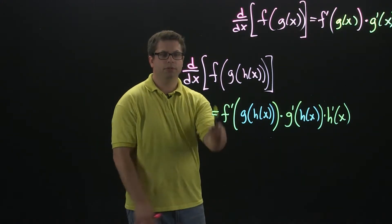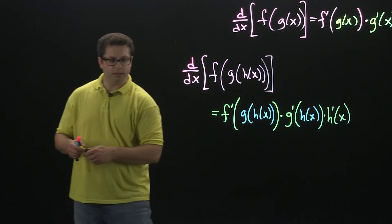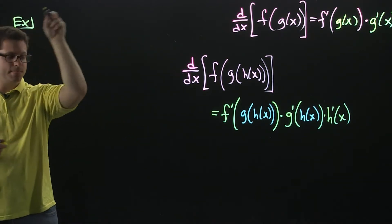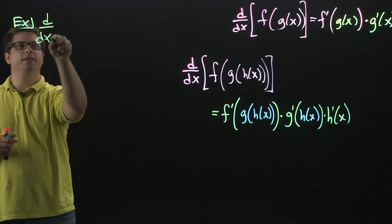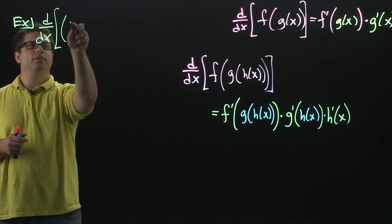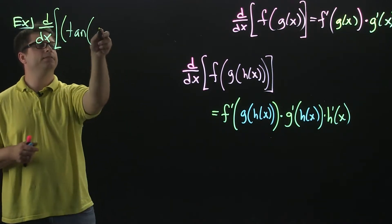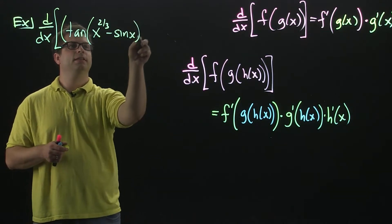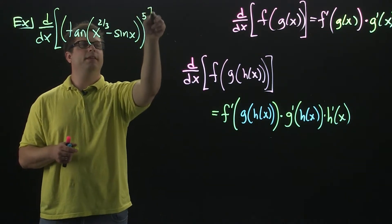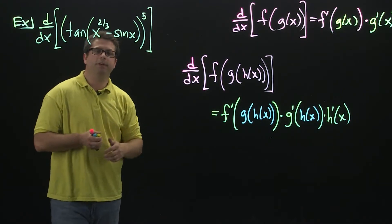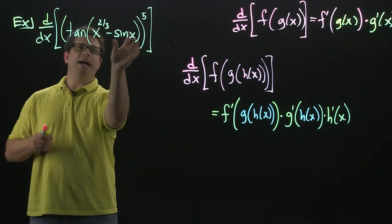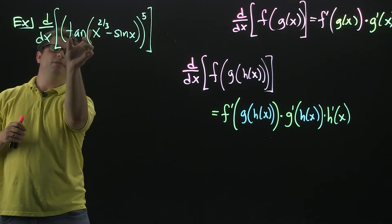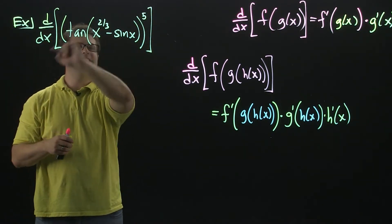And so that's the chain rule using three functions. Let's take a look at an example. We're going to have the derivative tangent of x to the two-thirds minus sine, all raised to the fifth. You can see that it's a composition of three functions. We have the outside function, which is the fifth power. Then you have inside, which is tangent, and then you have a function inside tangent.